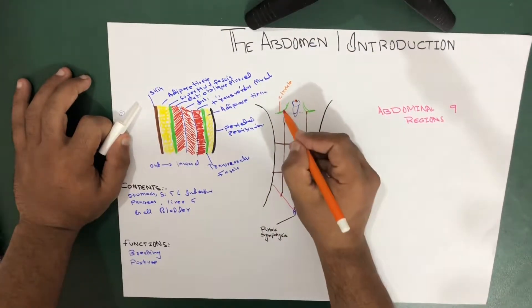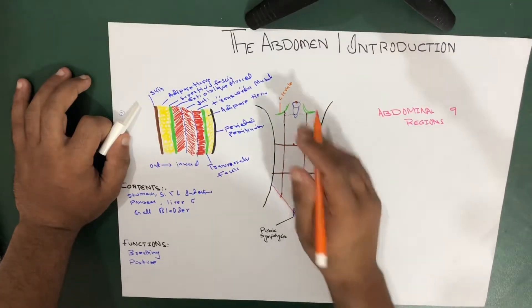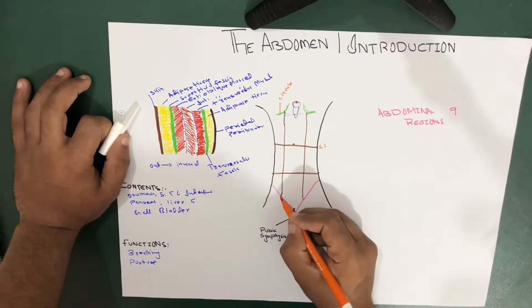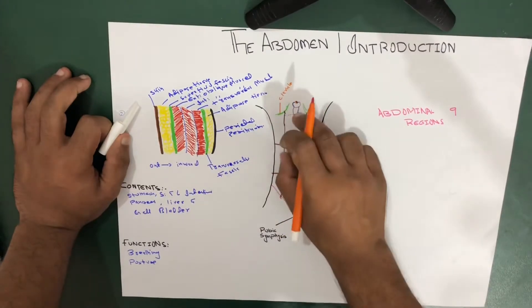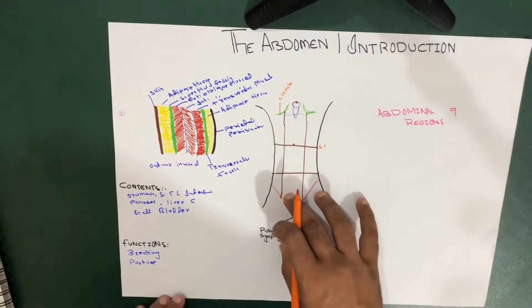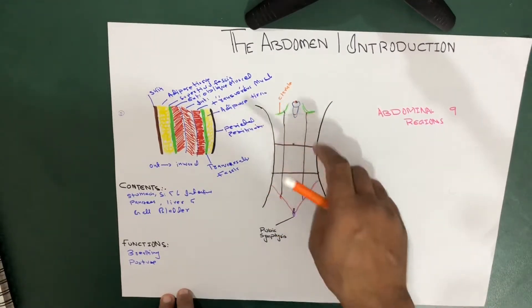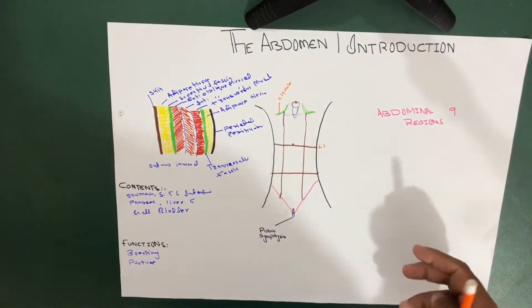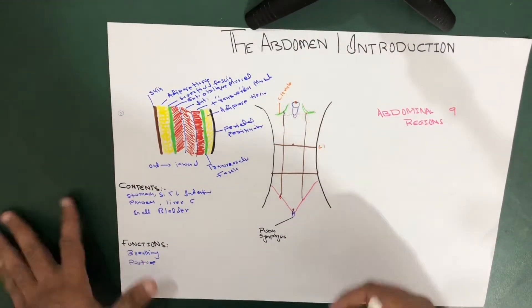This is the inguinal ligament, this is the clavicle, we go mid, and we go from mid, we go vertically downward, and we create this vertical line to the mid, this is the mid inguinal, mid to the inguinal ligament, and mid of the clavicle. So this vertical line is created, and these all lines together cause the abdominal region to divide into nine regions.